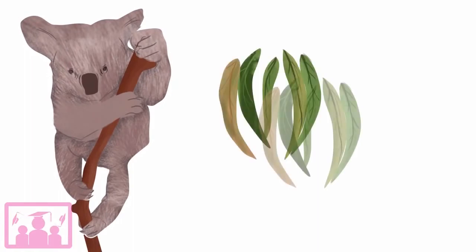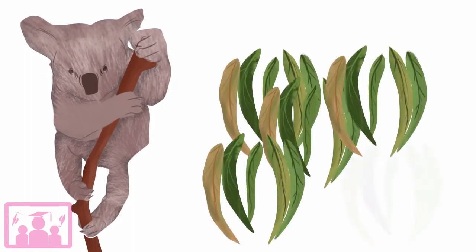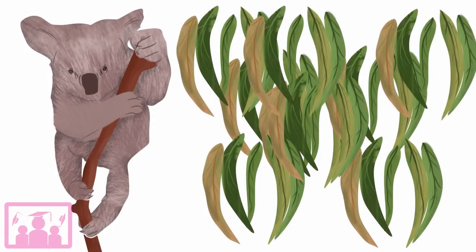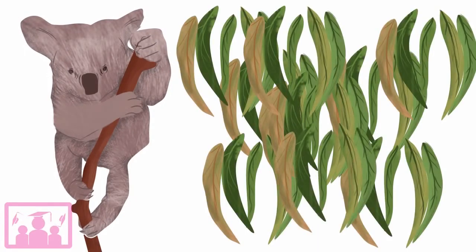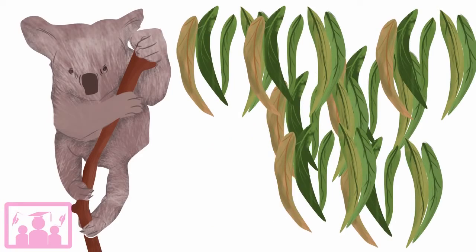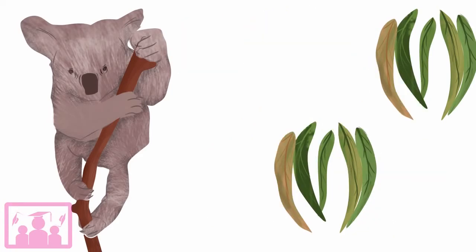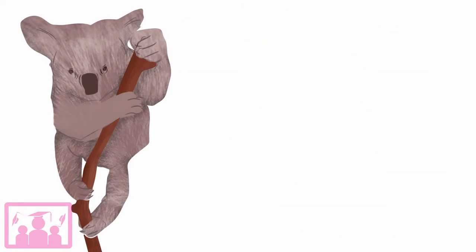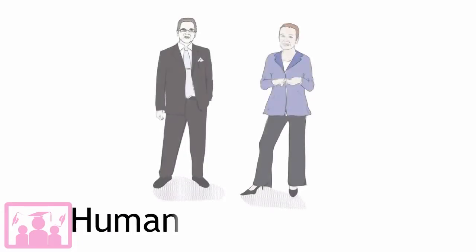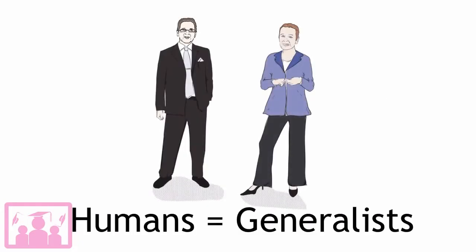Koala bears are a specialist species because they almost exclusively eat eucalyptus. If the eucalyptus was to become extinct, then it is likely that the koala would also become extinct. Humans are a generalist species because we eat almost anything.